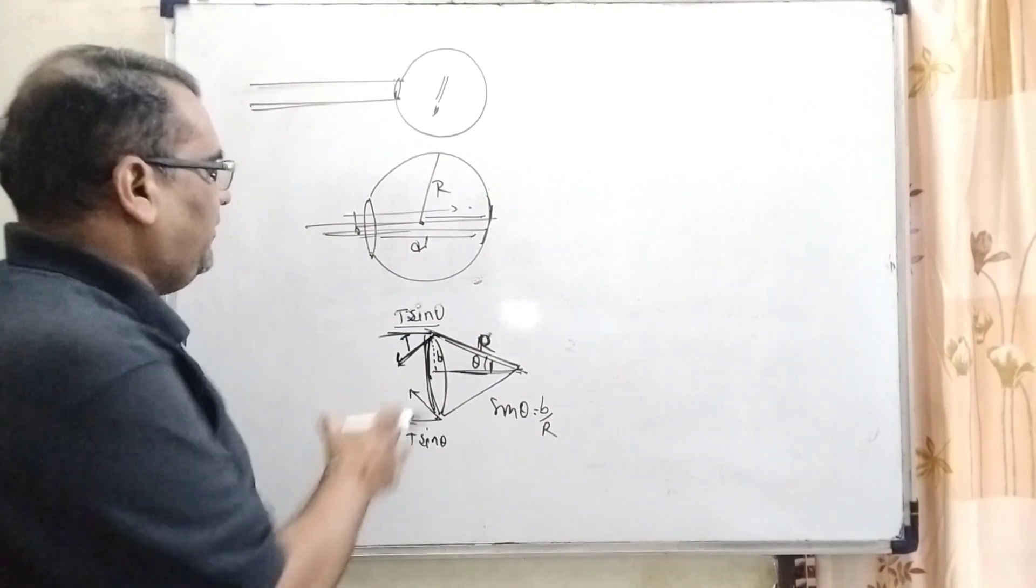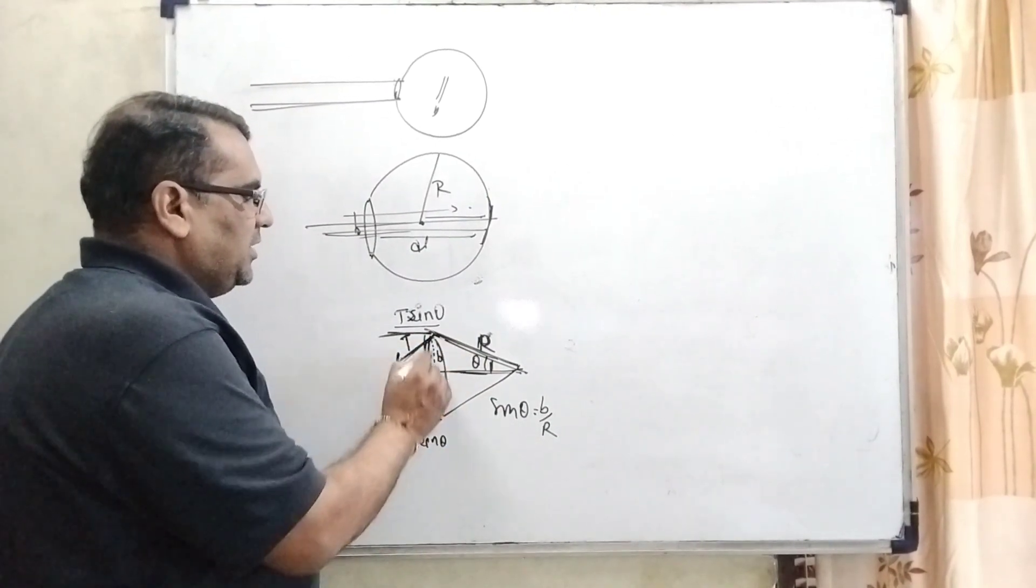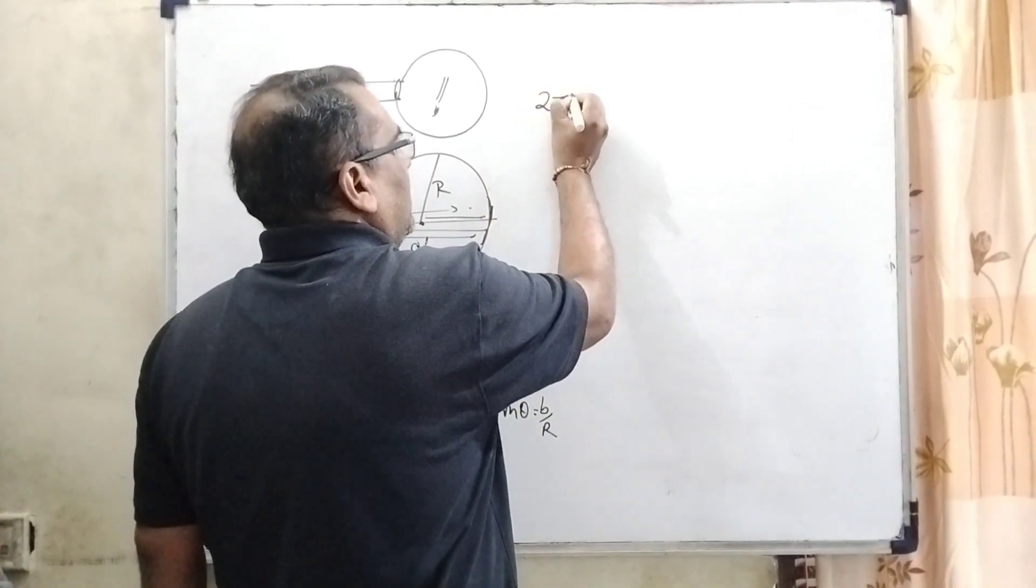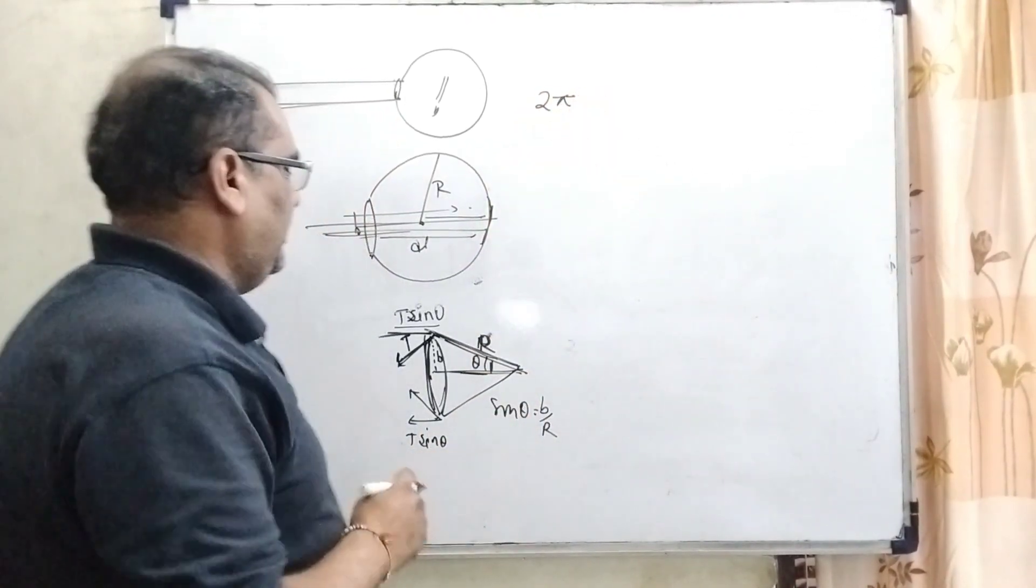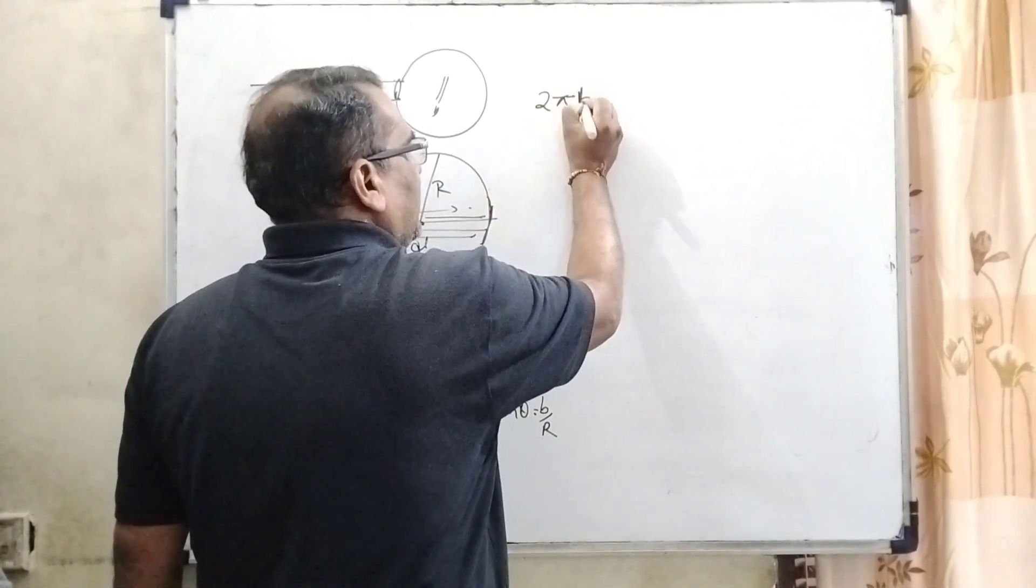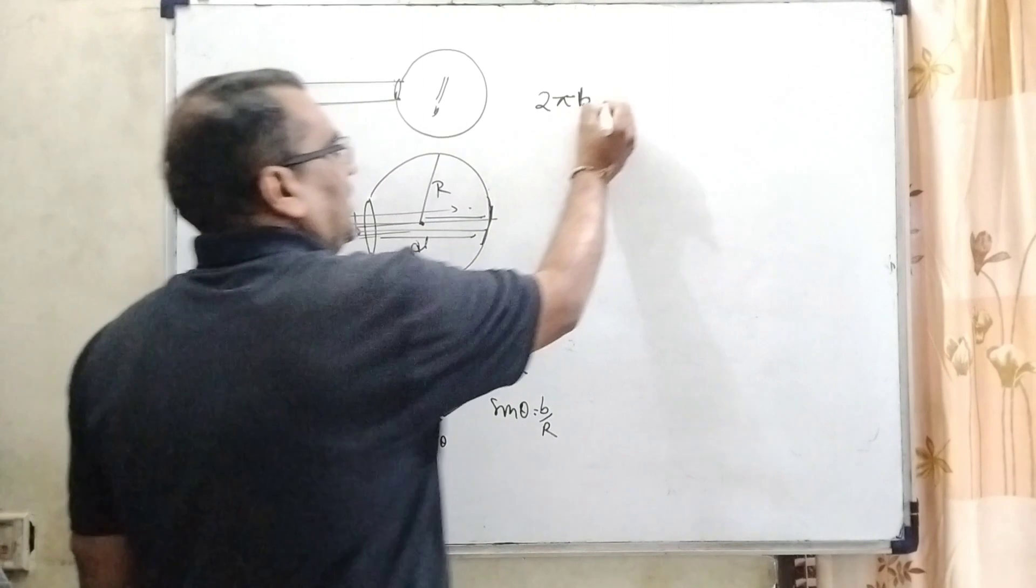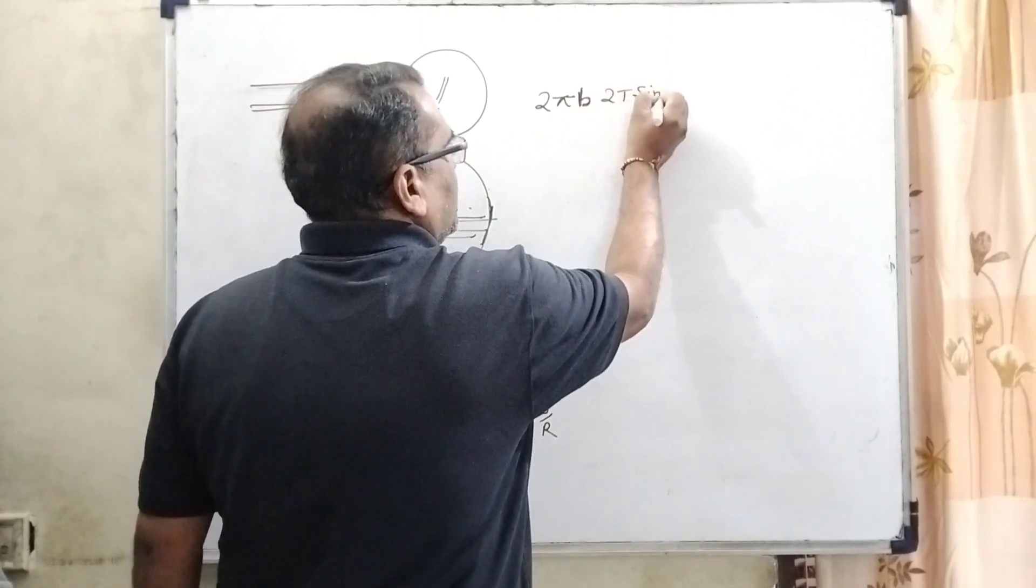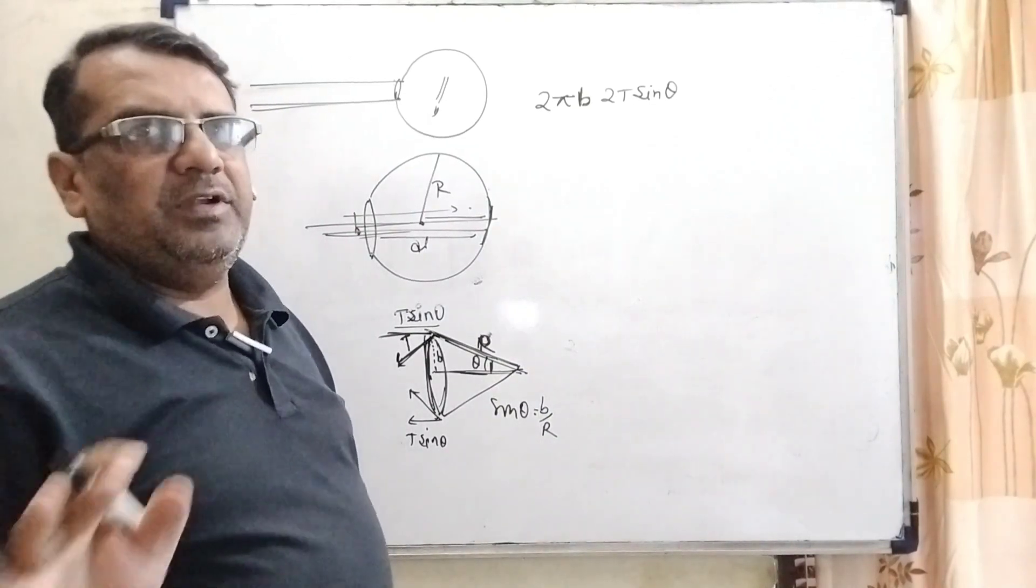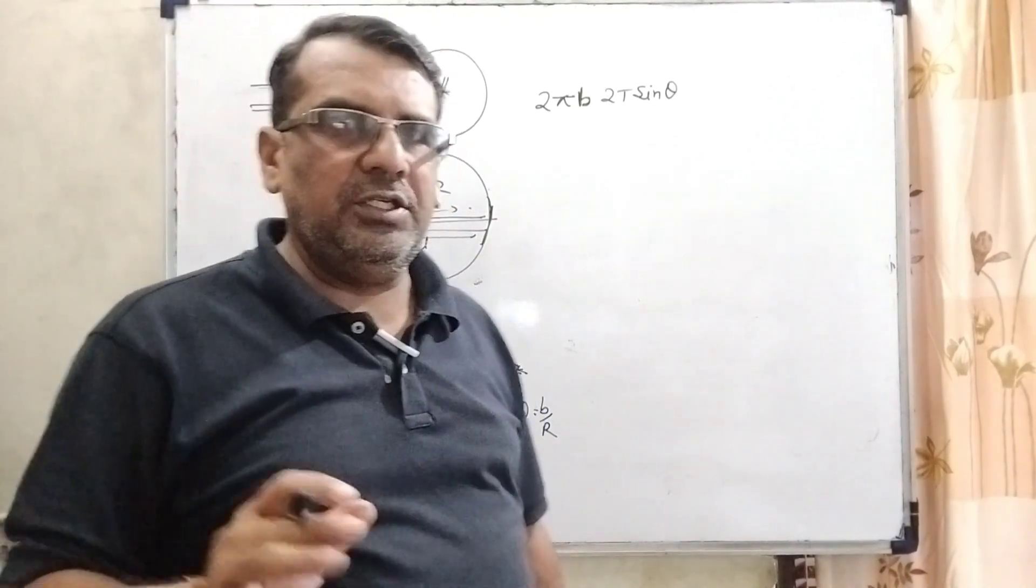Now here surface tension, the total surface tension is applied on the circumference of the ring. So therefore we have 2πB. In place of R, we substitute B because radius of this ring is given as B. And 2T sin θ. Why are we using 2T? Because surface tension is applied on the free surface and there are two free surfaces of the balloon.